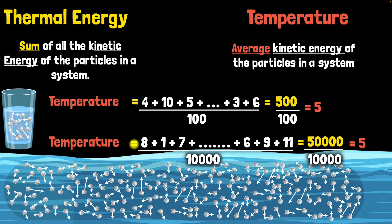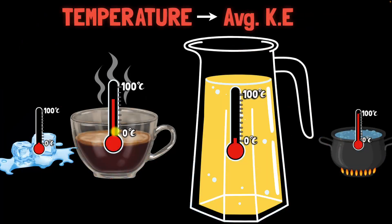So when you measure the temperature of something — when you say this coffee is very hot and has a higher temperature — what we really mean is that the average kinetic energy of its particles is very high. And when we say ice is very cold with a low temperature, that means the average kinetic energy of all the molecules is very low. That's the meaning of the word temperature.